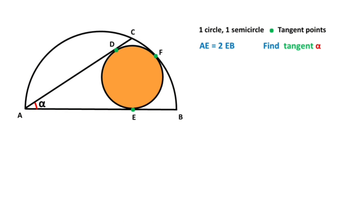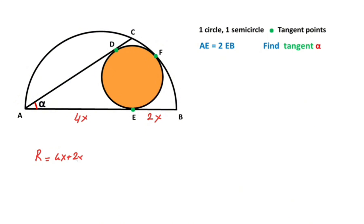First of all, if we call the length of EB as 2x, then the length of AE becomes 4x. After that, the radius of the semicircle equals (4x + 2x) / 2, so the radius of the semicircle equals 3x. Next, let point O be the center of the semicircle, so this segment must be x units and this one must be 3x.